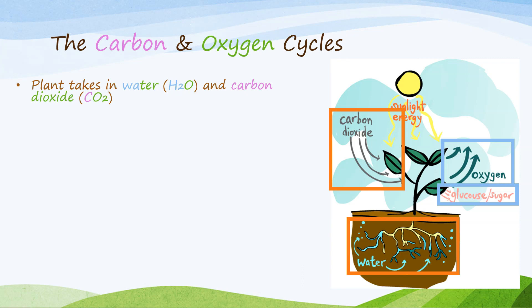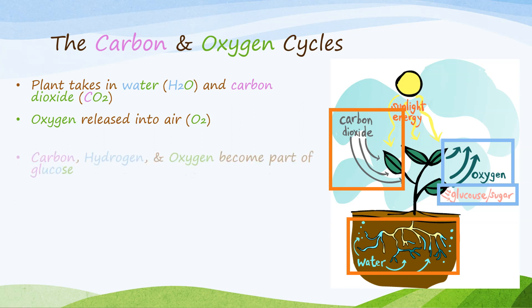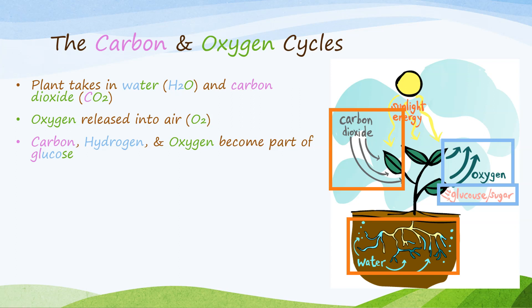Plants are a huge part of the carbon and oxygen cycle because they take in carbon dioxide and release oxygen into the air, which animals — including humans — need. The plants also use the carbon, hydrogen, and oxygen in the water and carbon dioxide, and they become part of a glucose molecule (C6H12O6). The carbon and oxygen in the glucose could then go a couple of different places.